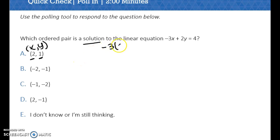So I plug 2 in for x. So negative 3 times 2 plus 2 times 1 equals 4. So negative 6 plus 2, well that's negative 4. So those are not equal, meaning a cannot be a solution.